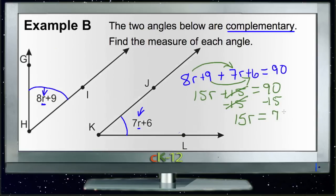If 15R equals 75, then we could divide everything by 15, and learn that R must be 5.